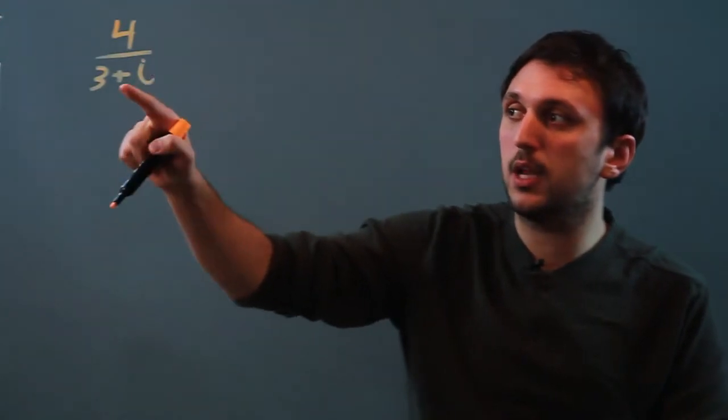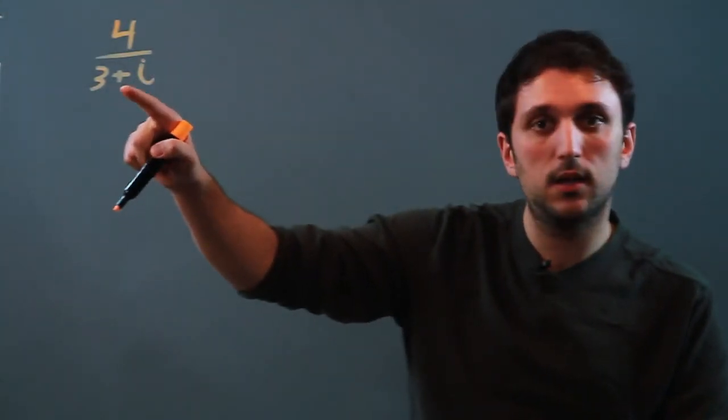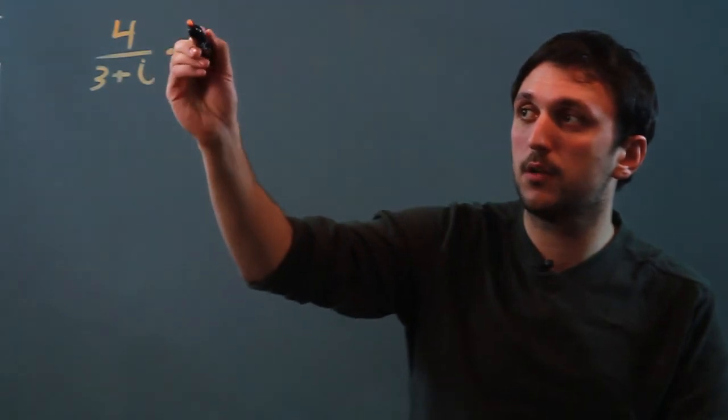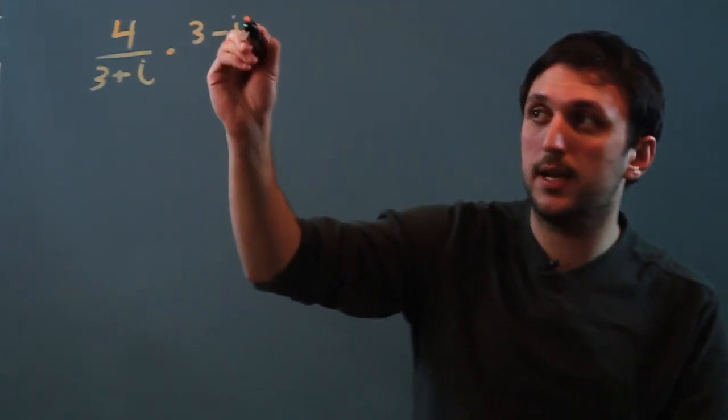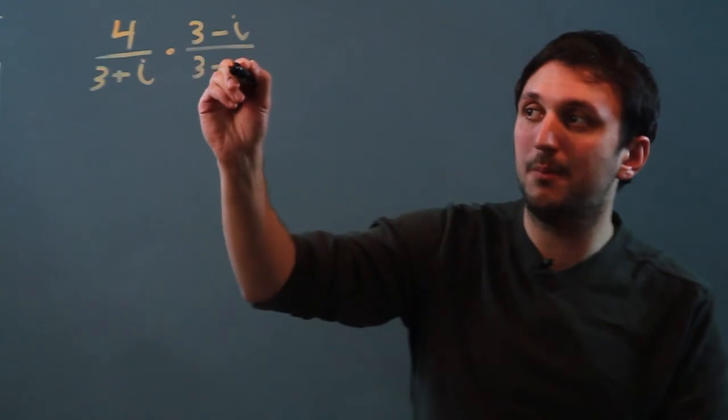So a conjugate is the opposite sign of this polynomial. So we say times 3 minus i over 3 minus i.